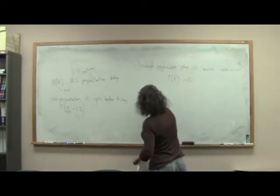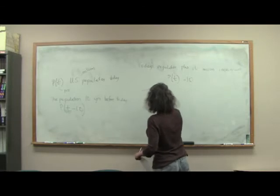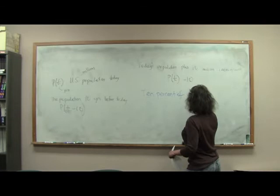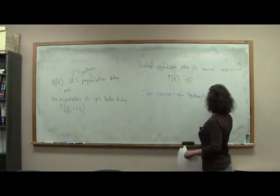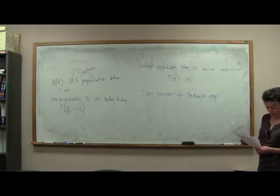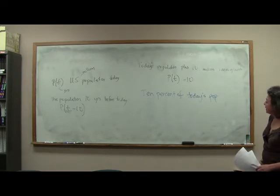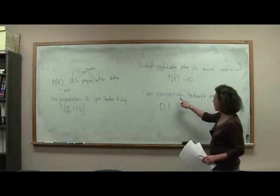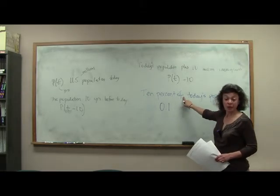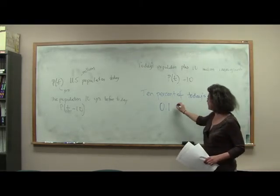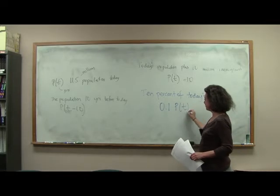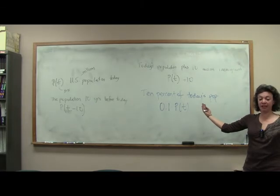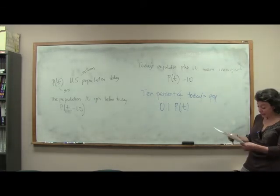What if I wanted to say 10% of today's population? Well, 10% in decimal form is 0.1 of, we know means multiply, and today's population is p of t. Notice, this would vertically compress our graph by a lot.